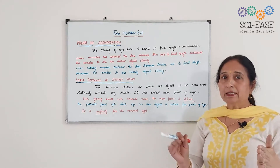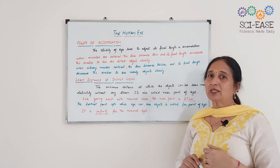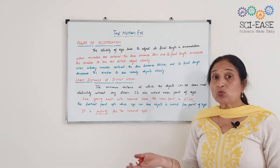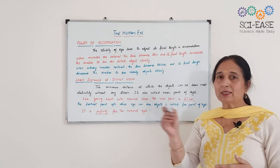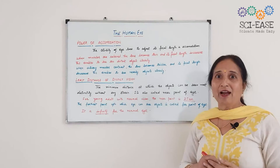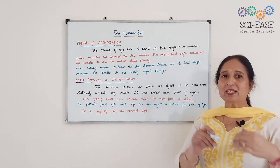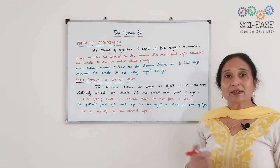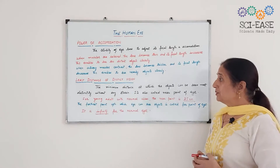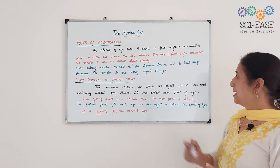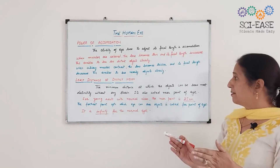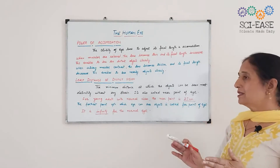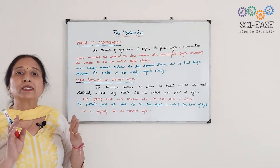Another important term is least distance of distinct vision. Sometimes this question appears in multiple choice: what is the least distance of distinct vision of the human eye — 20 cm, 25 cm, 30 cm, or 15 cm? You are to pick the correct one. The minimum distance at which objects can be seen most distinctly without any strain is known as the least distance of distinct vision.